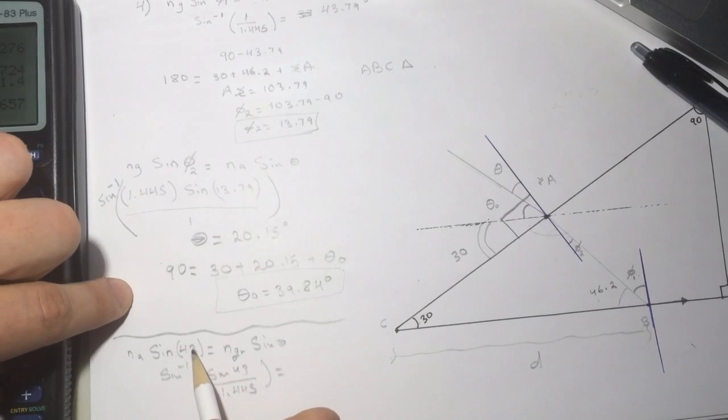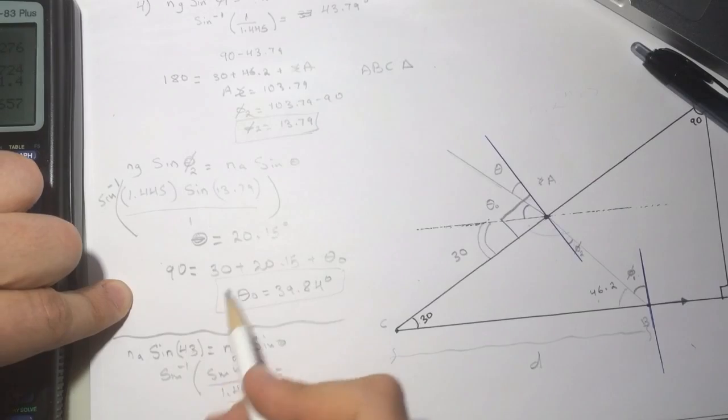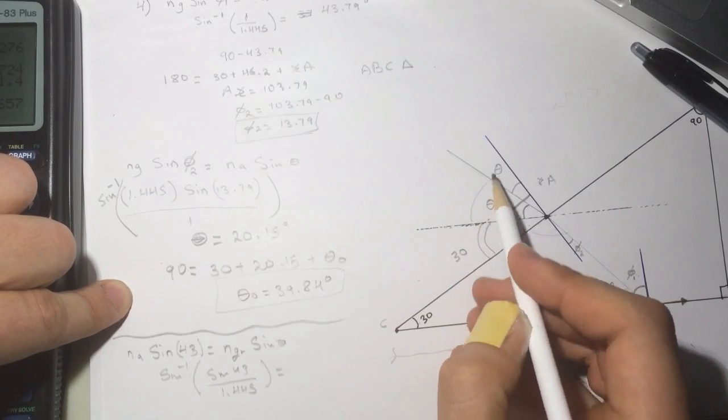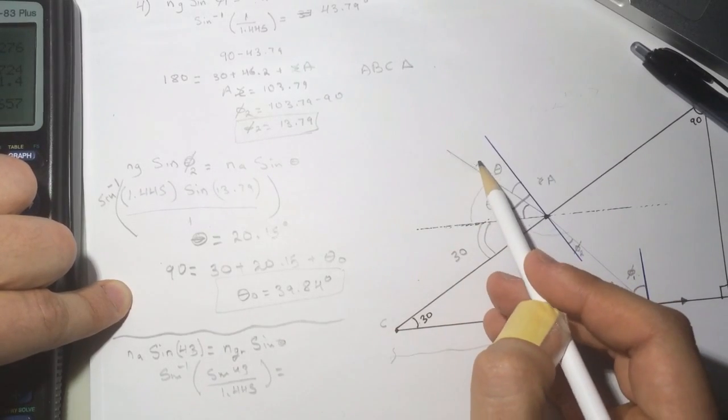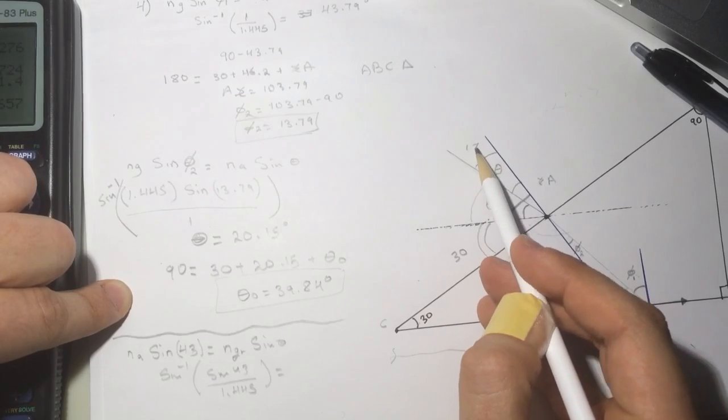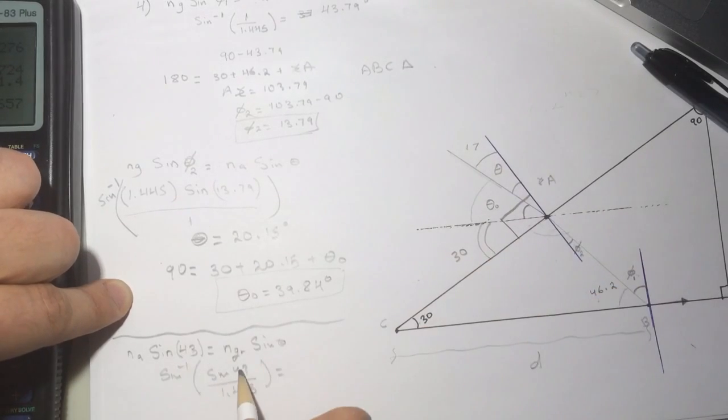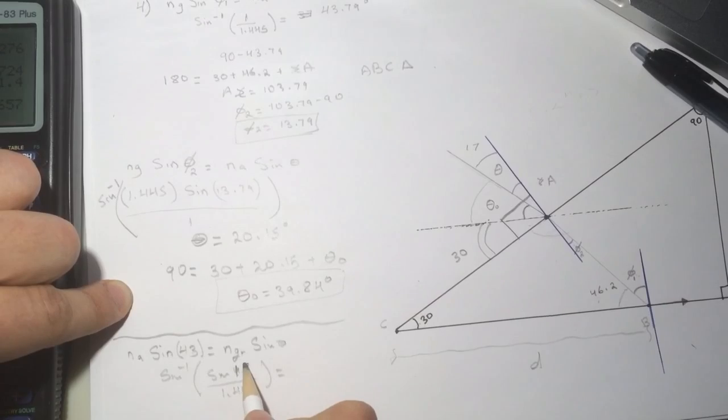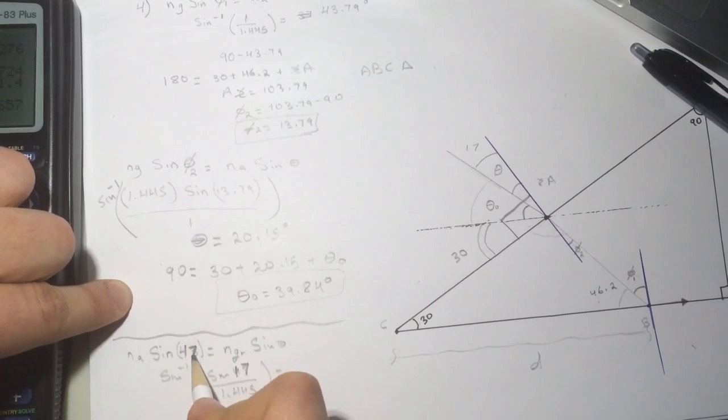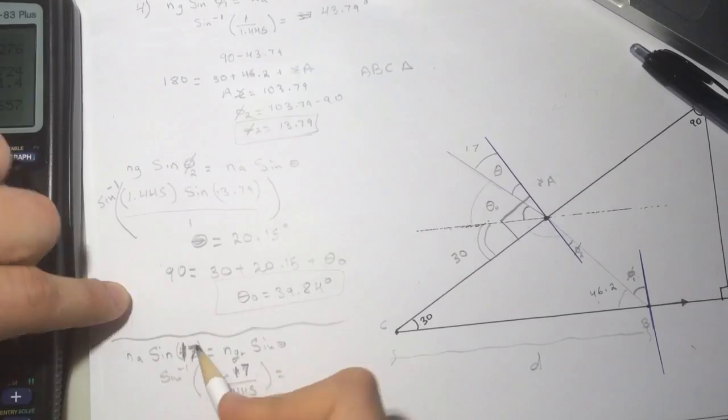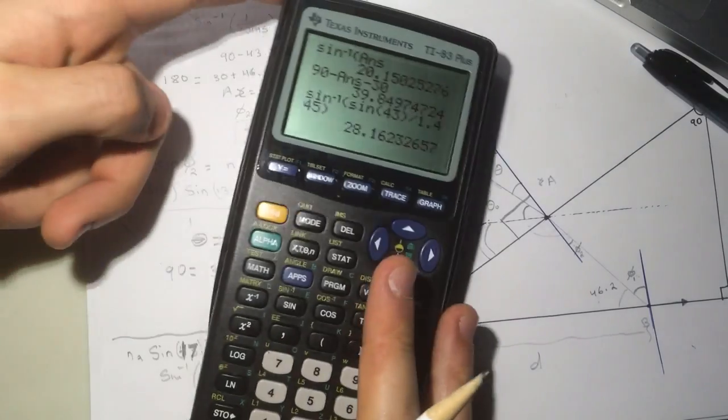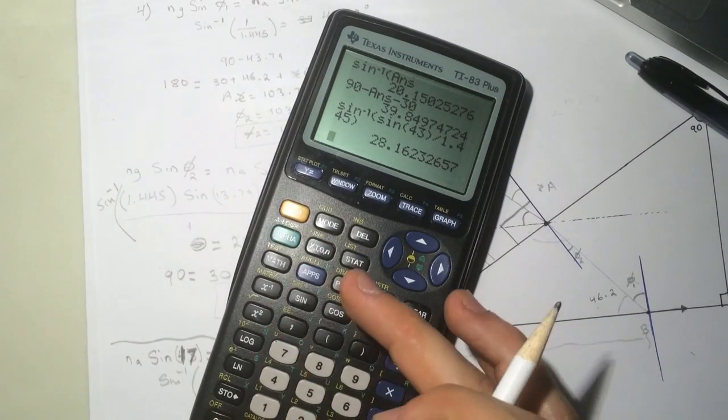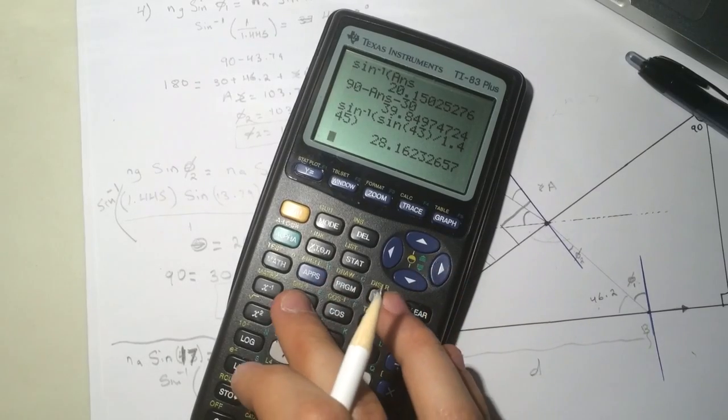This angle is the angle that they gave us. When we do this we're gonna find this guy which was 17, the one we found before. That's right, so this guy is 17. Sine of 17, let's do this again.